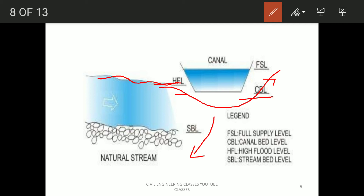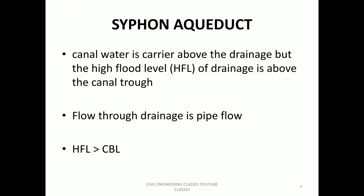The next type is the siphon aqueduct. In a siphon aqueduct, the stream's high flood level is above the bottom of the canal, so the drainage flows under pressure as pipe flow beneath the canal.